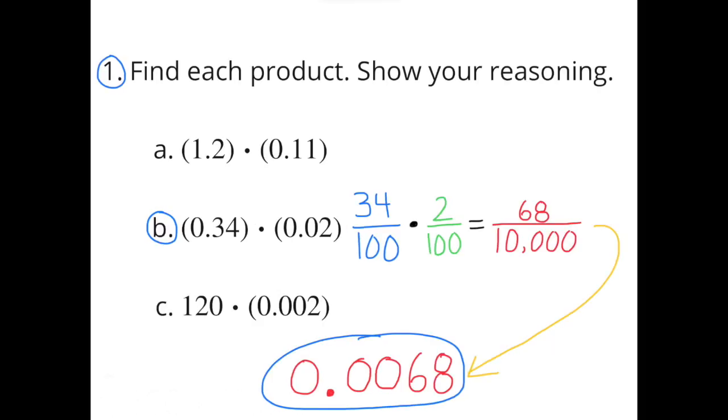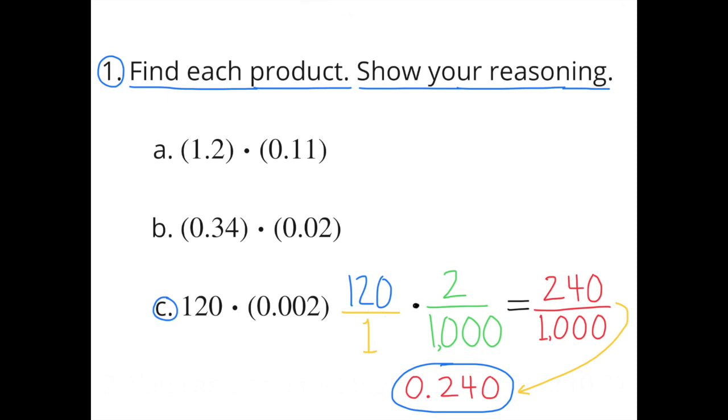Part b: 34 hundredths times 2 hundredths equals 68 ten-thousandths. Part c: 120 times 2 thousandths equals 240 thousandths, or 24 hundredths.